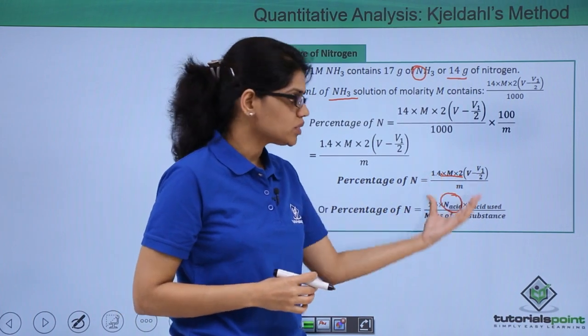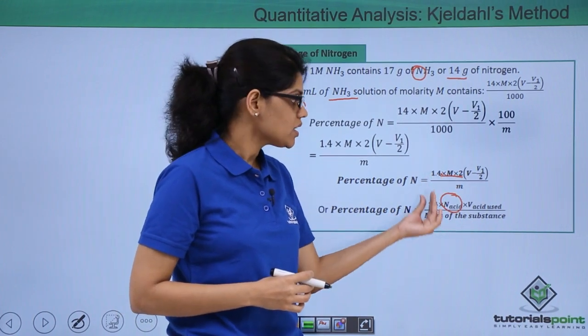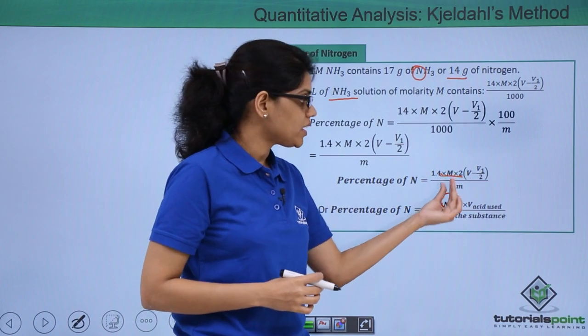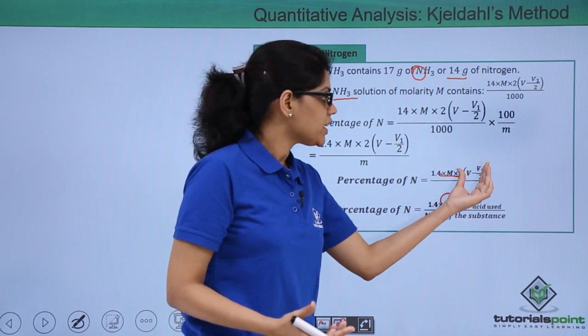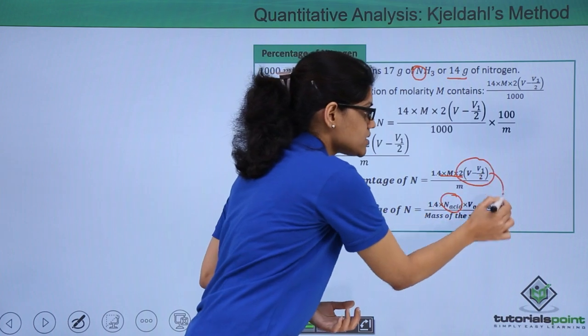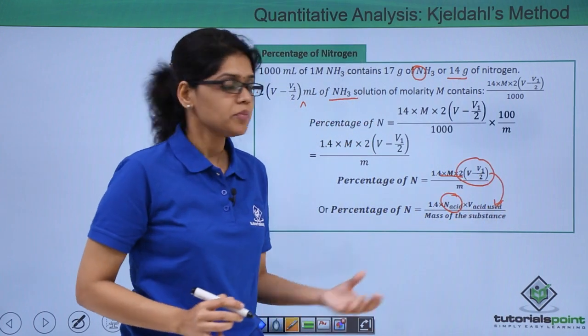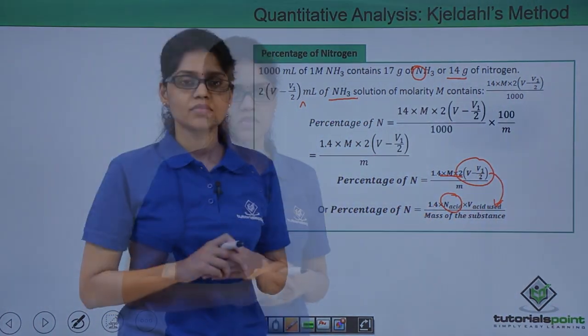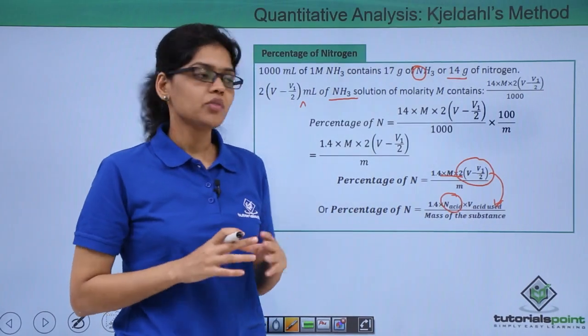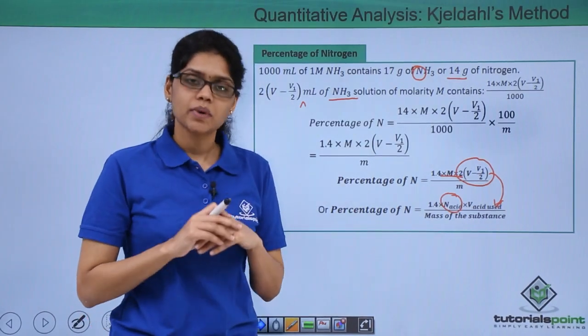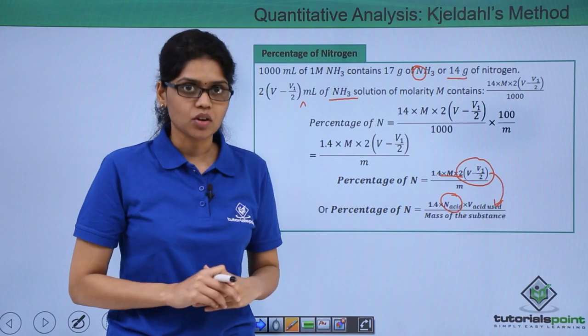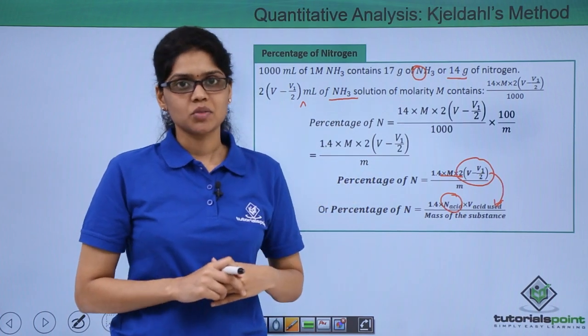Here essentially both the formulas are same where we are using 1.4 times normality of any acid that we are using multiplied by volume of that acid that is consumed in the reaction with ammonia by the total mass of the substance. I hope you are very clear on how we have derived this particular formula of percentage of nitrogen in an organic compound using Kjeldahl's method. Thank you.